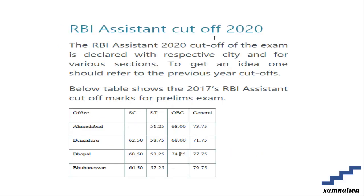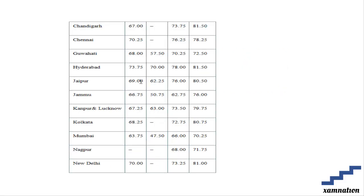The 2020 cutoffs will be available in coming days. To give a reference, in the 2017 RBI Assistant exam, cutoffs for Ahmedabad were: ST — 51.25, OBC — 68, and General — 73.75. State-wise cutoffs were released for cities including Chandigarh, Chennai, Guwahati, and New Delhi, covering General, OBC, and SC/ST categories.